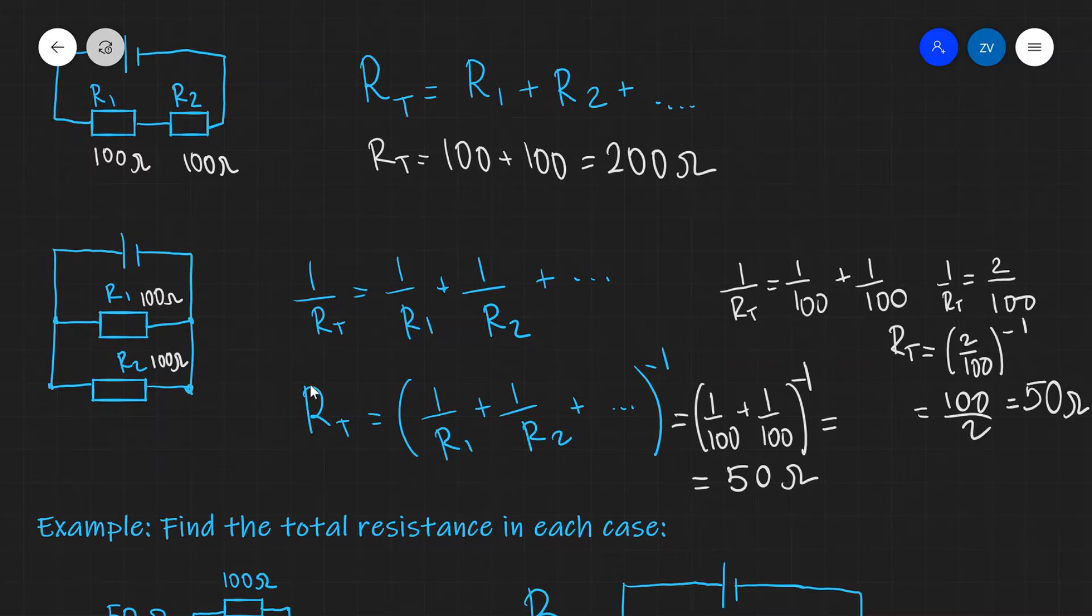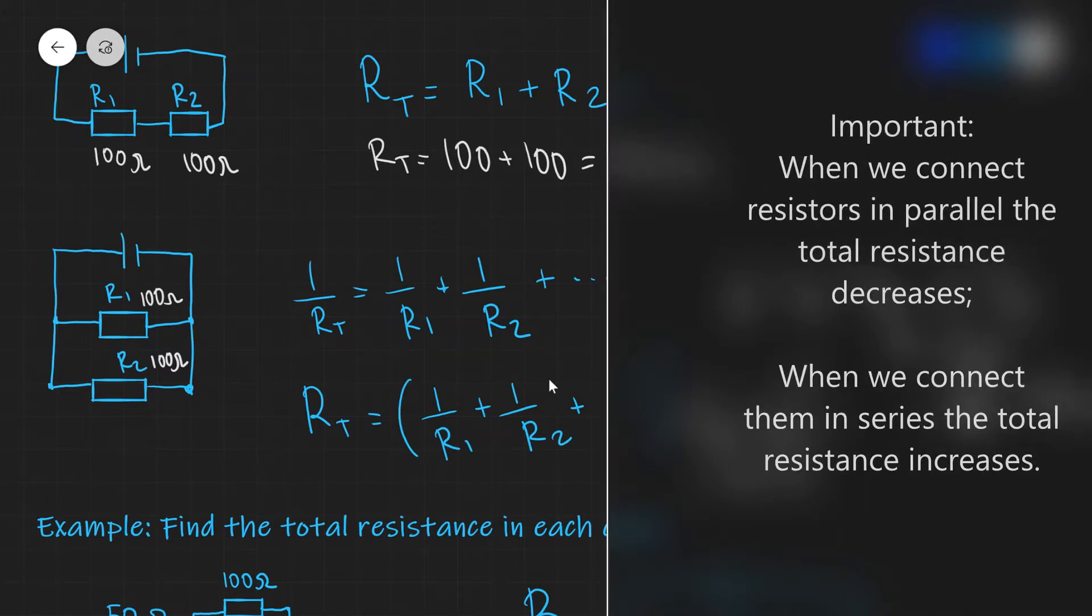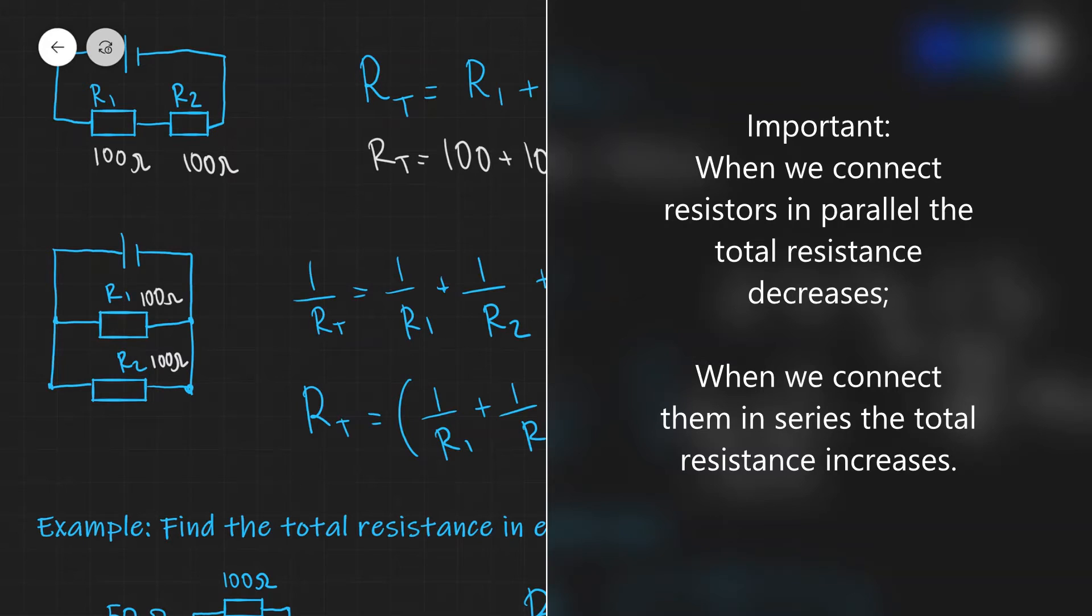Remember that the two expressions are absolutely identical. Please also note that whenever we connect two resistors in parallel, the total resistance decreases. So this is really important and counterintuitive. But if we were to connect two resistors in series, the total resistance will increase.